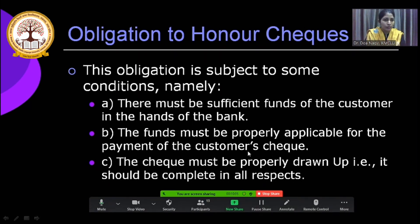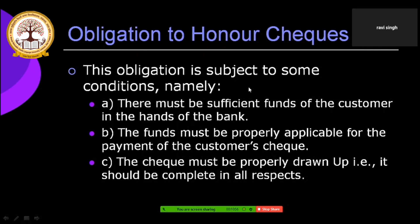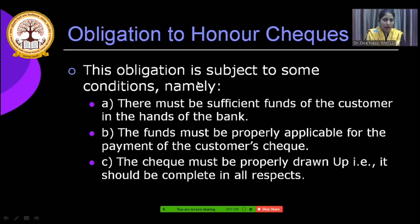Third, the check must be properly drawn up. This means the name of the customer should be correct, the name of the payee should be properly mentioned, the date should be correct, the customer's signature should match the bank's records, and the check should not be torn or mutilated. Given all these conditions, it is obligatory for the bank to honor checks — provided funds are sufficient, funds are applicable, and the check is properly drawn up with no forged signatures.